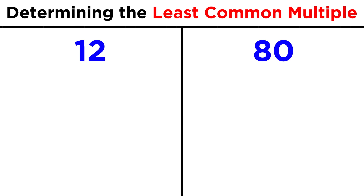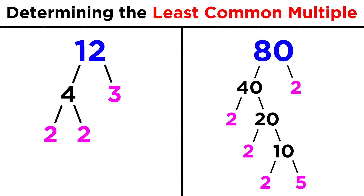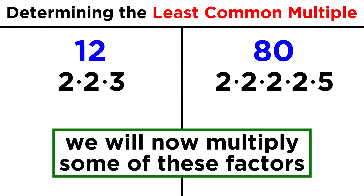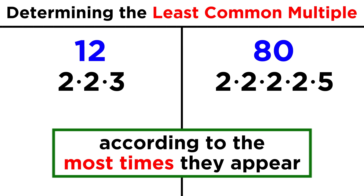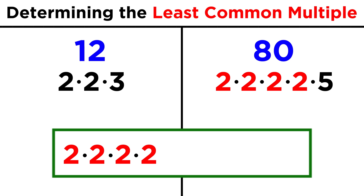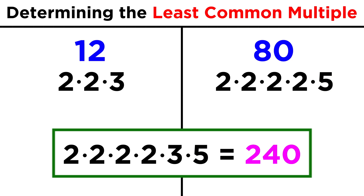The first step will be to find the prime factorization of each number. For twelve, that's two times two times three. And for eighty, that's two times two times two times two times five. Now we simply take every factor we see here and multiply them together, with each factor being multiplied a number of times equal to the most times it appears for one number. Two appears four times for eighty, which is more than the two times it appears for twelve. So let's put four twos, and then the one three, and then the one five. We find the product, and that's two hundred forty — so this will be the least common multiple for twelve and eighty.